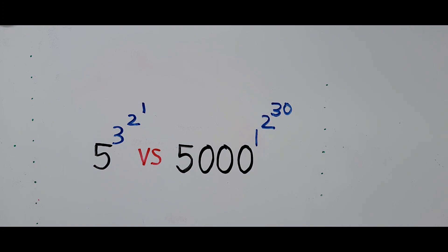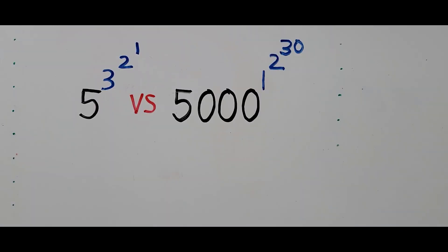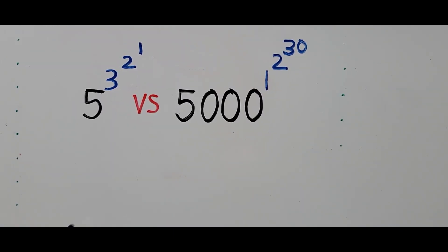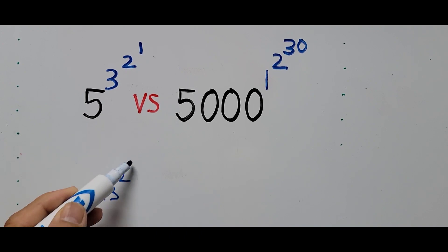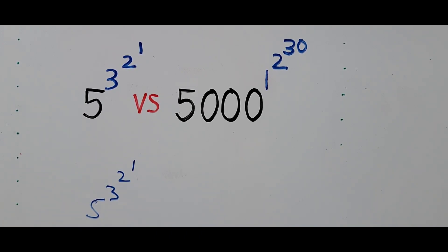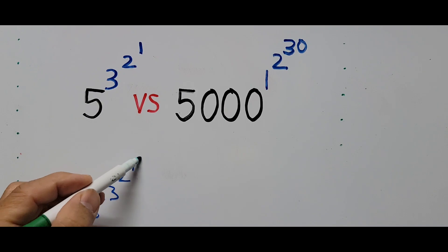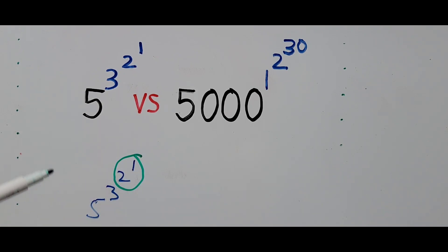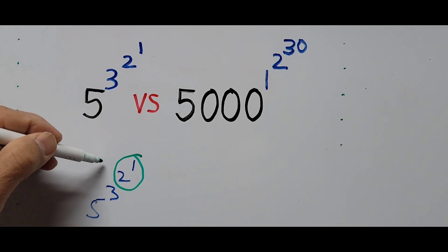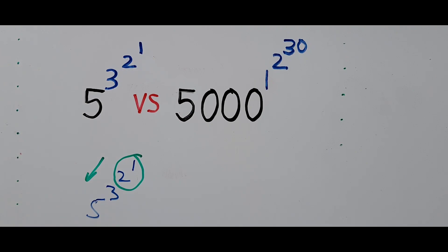Let's start with the left side: 5 to the power 3 to the power 2 to the power 1. The base is 5, and we start focusing on the exponent on top since we're going from top to bottom. So 2 to the power 1 is just 2.